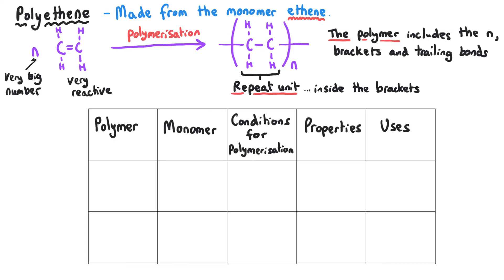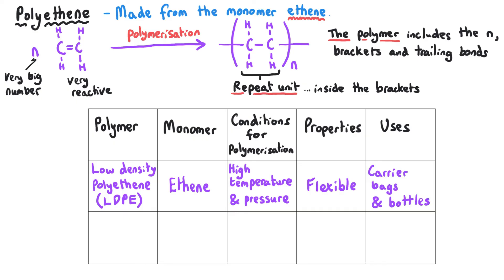There are in fact two different types of polyethene, and which type you get depends on the conditions that you use for the polymerization reaction. You can get low-density polyethene, and that's formed when we use high temperatures and under a high pressure as well, and we get a flexible polymer that is really really useful for things such as carrier bags and for plastic drinks bottles, water bottles that need to have a little bit of give in them.